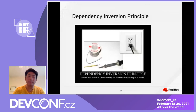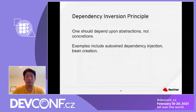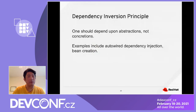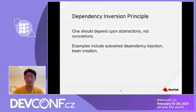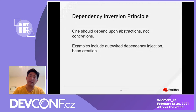Dependency Inversion Principle: one should depend upon abstraction, not concretion. Always think about using the abstraction layer of an object. Do not depend on the concretion. In the Java world, for example, we use autowire for dependency and bean injection — these are good examples of the Dependency Inversion Principle.